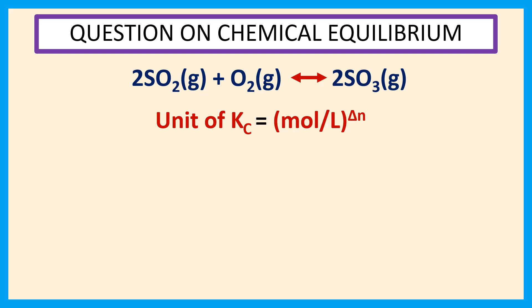Now, we first calculate the value of ΔN. ΔN equals 2 (for 2 moles of gaseous product SO3) minus 2 (for 2 moles of gaseous reactant SO2) minus 1 (for 1 mole of gaseous reactant O2), which equals -1.